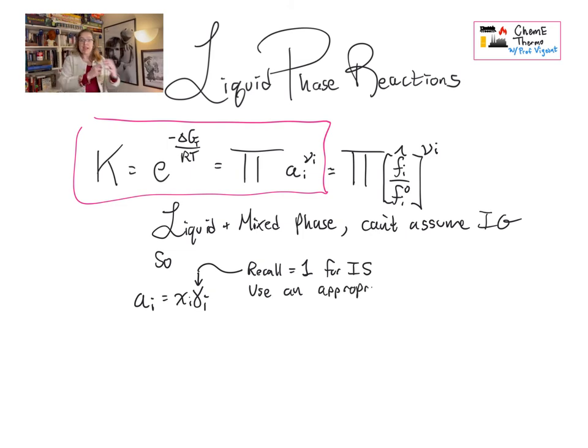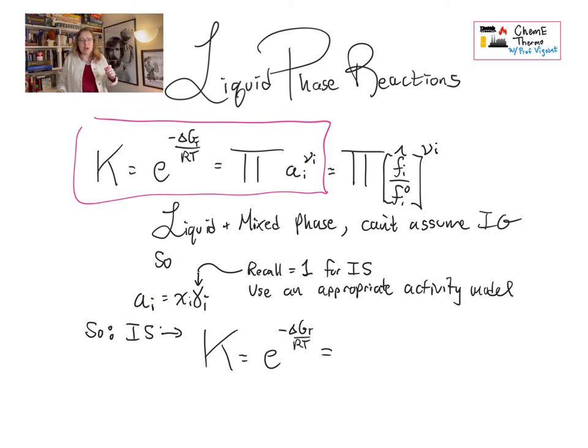Remember, thermodynamics operates in terms of mole fractions, whereas normal life operates in terms of things like grams per liter. And even things that seem quite concentrated, remember seawater, are extremely dilute from the standpoint of moles. So even though we might have some components that we know aren't an ideal solution with water, we might be close enough to pure water in an aqueous system that we can get away with using the ideal solution assumption while calculating our activities.